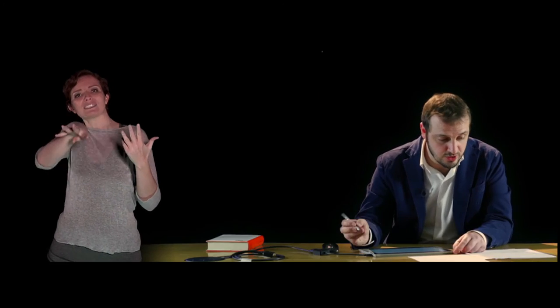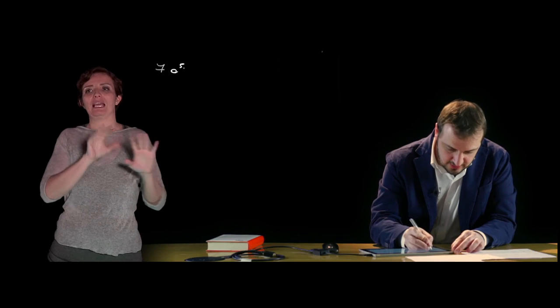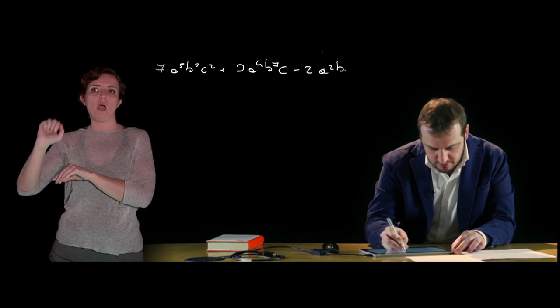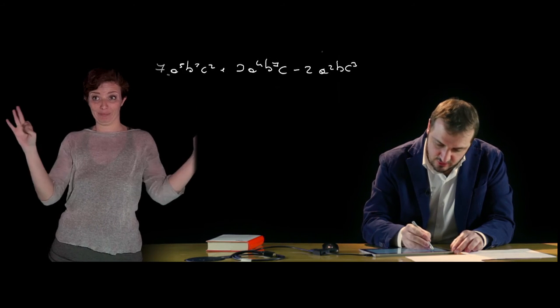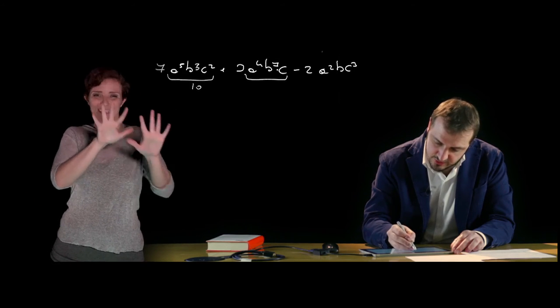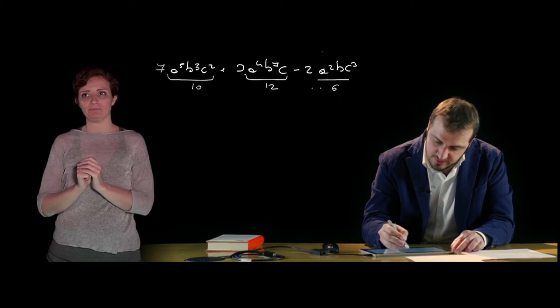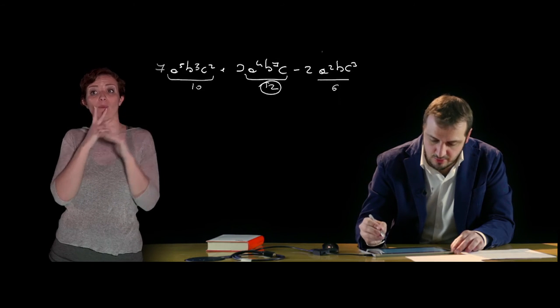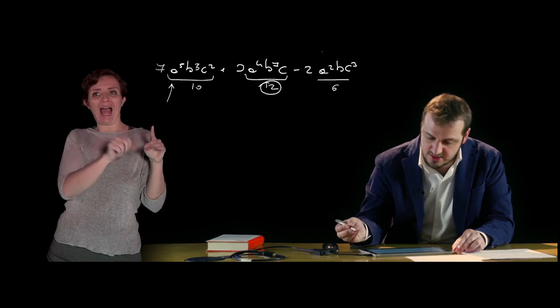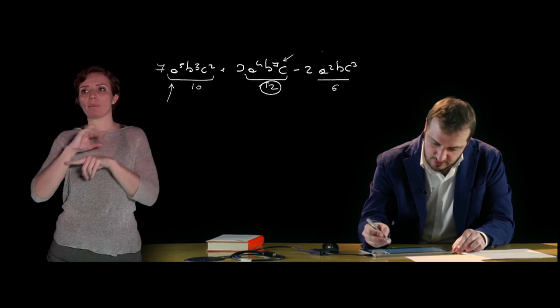I polinomi così ridotti, se costituiti da un termine si chiamano monomi, due termini binomi, tre termini trinomi, quattro quadrinomi e così via. Il grado del polinomio è il grado maggiore presente fra i vari gradi dei monomi. Per esempio se abbiamo 7a alla quinta b alla terza c alla seconda più 3a alla quarta b alla settima c meno 2a alla seconda b c alla terza, abbiamo che il grado del primo monomio è 5+3+2=10, il secondo 4+7+1=12, e l'ultimo 2+1+3=6. Quindi il grado del polinomio è pari a 12, che è il grado massimo. Rispetto alla lettera a il grado sarà 5, rispetto a b sarà 7, rispetto a c sarà 3.